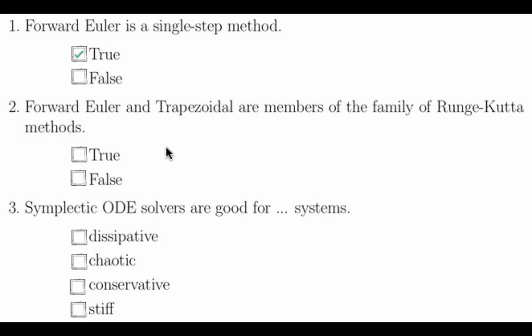Question two asks whether forward Euler and trapezoidal are members of the family of Runge-Kutta methods. This is true. Forward Euler is a first order Runge-Kutta method, and trapezoidal is a second order Runge-Kutta method. So this is true.